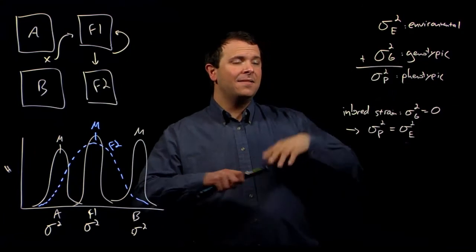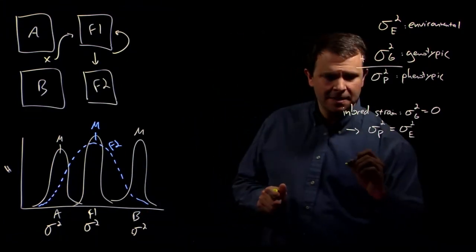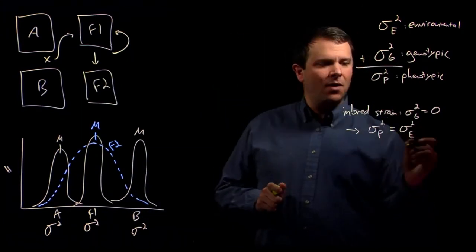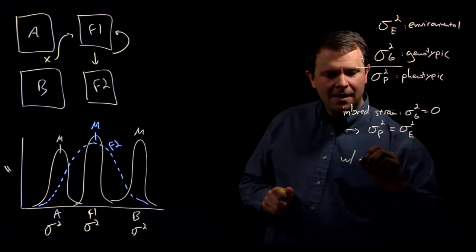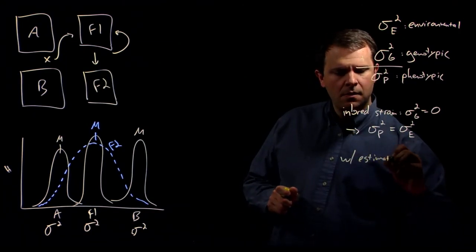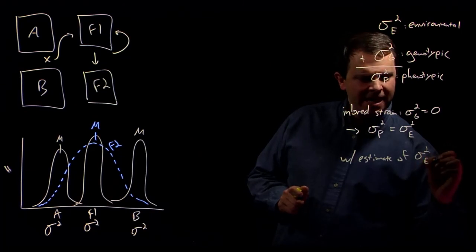We can then go ahead and estimate the rest of it. We can estimate the genotypic variance, because once we have an estimate of σ²E.